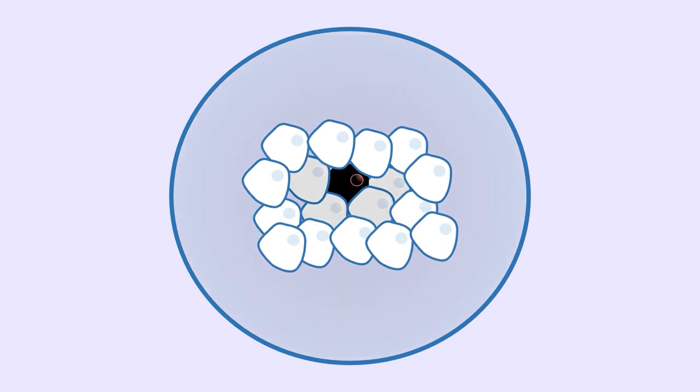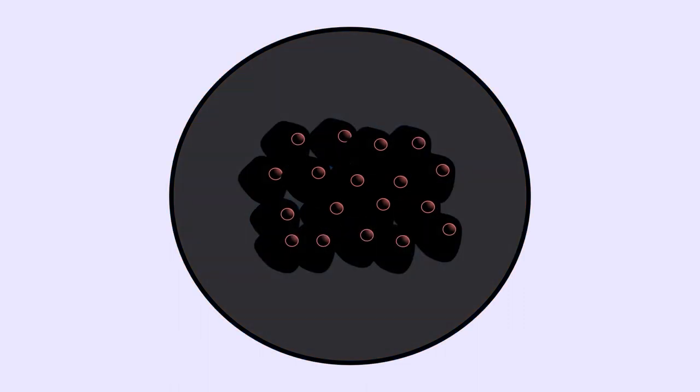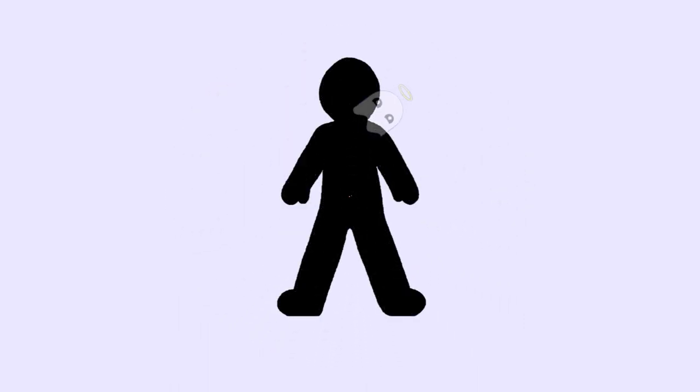Cancer. It only takes one cell gone rogue for it to spread like wildfire throughout the body, multiplying and spreading throughout the organs until they can no longer function.